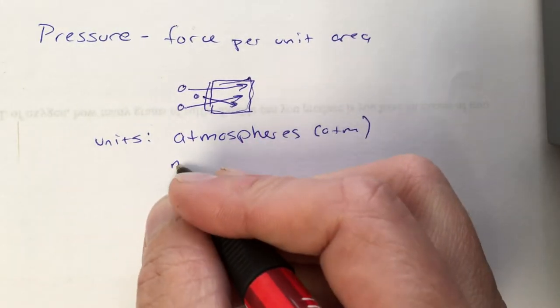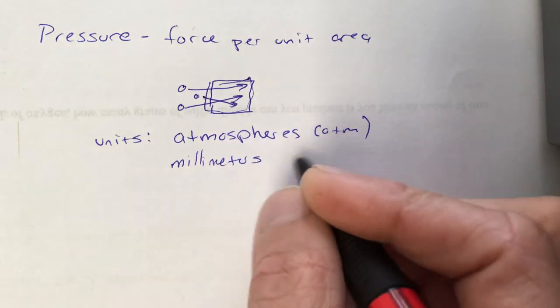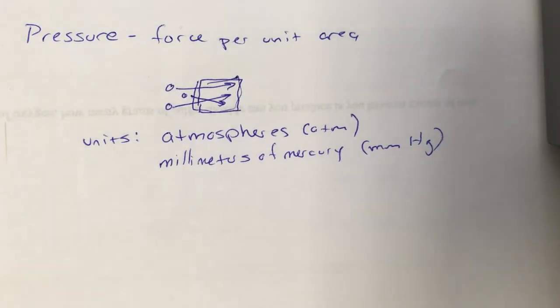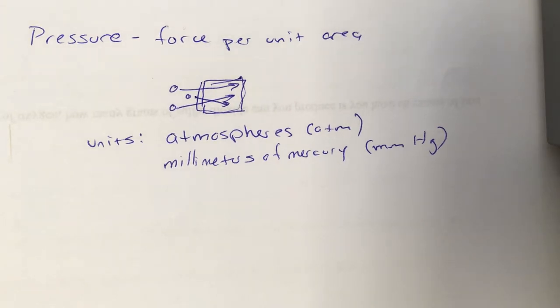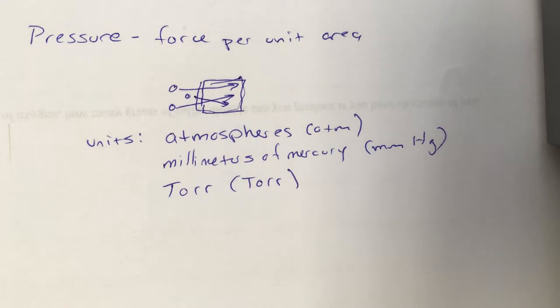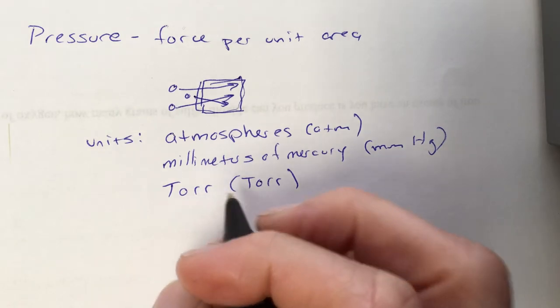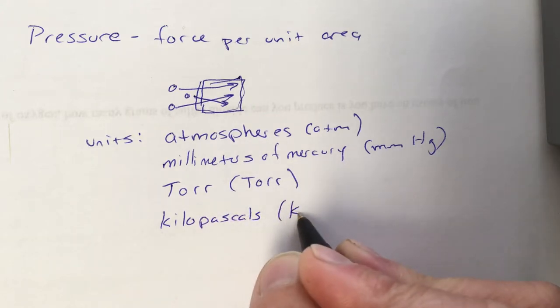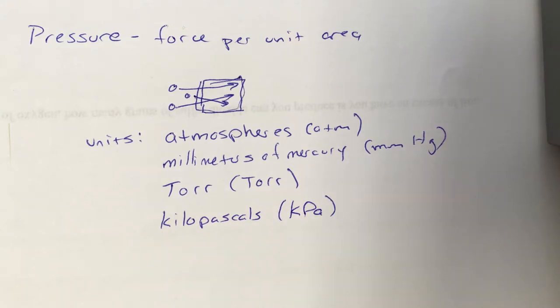We have millimeters of mercury, abbreviated mmHg. It's a very old unit. It goes all the way back to the inventions of the barometer. The way the barometer worked was with a tube full of mercury, and they'd measure how high that column of mercury was. We have Torr, abbreviated Torr. There's no real abbreviation for it. It's very closely related to the millimeter of mercury thing. In fact, one millimeter mercury is one Torr. We have pascals. Usually, we measure it in kilopascals, which would be kPa. And there's others, but these are the most common ones that we use in gas laws and chemistry.